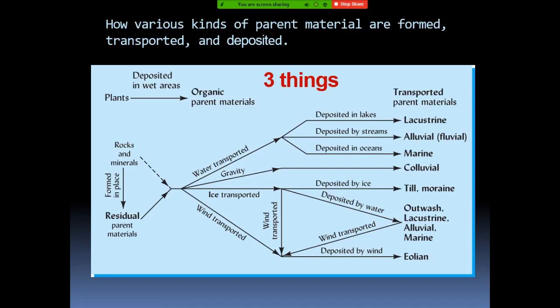The second case is that the soil or rocks might be transported. There are different ways of transporting the soil — by water, by gravity, by ice, or by wind. Depending on the means of transportation and the place of deposition, we have different names for the parent material. For example, if transported by water and deposited in a lake, we call it lacustrine. If deposited at a stream, we call it alluvium. If deposited at the ocean, we call it marine.